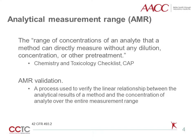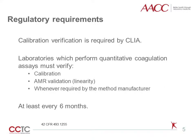AMR validation is a process used to verify the linear relationship between the analytical results of a method and the concentration of analyte over the entire measurement range. CLIA regulations require that laboratories perform calibration verification at least every six months. Calibration verification is also indicated whenever there is a complete change in reagents to a new lot, major preventative maintenance or replacement of critical parts of the instrument, relocation of the instrument, or when quality control data show a trend, shift, or are outside acceptable limits. College of American Pathologists checklist requirements break this down into calibration, verification, and AMR validation or linearity.